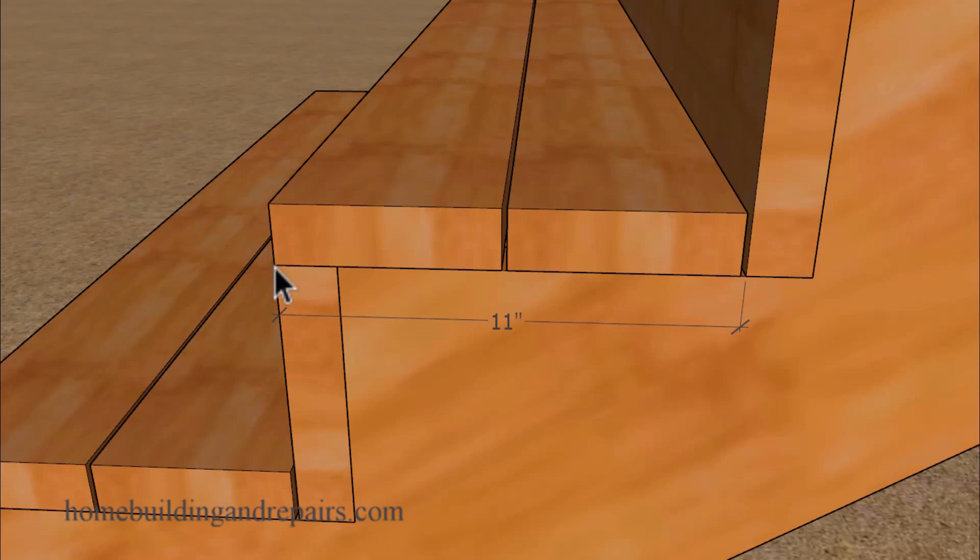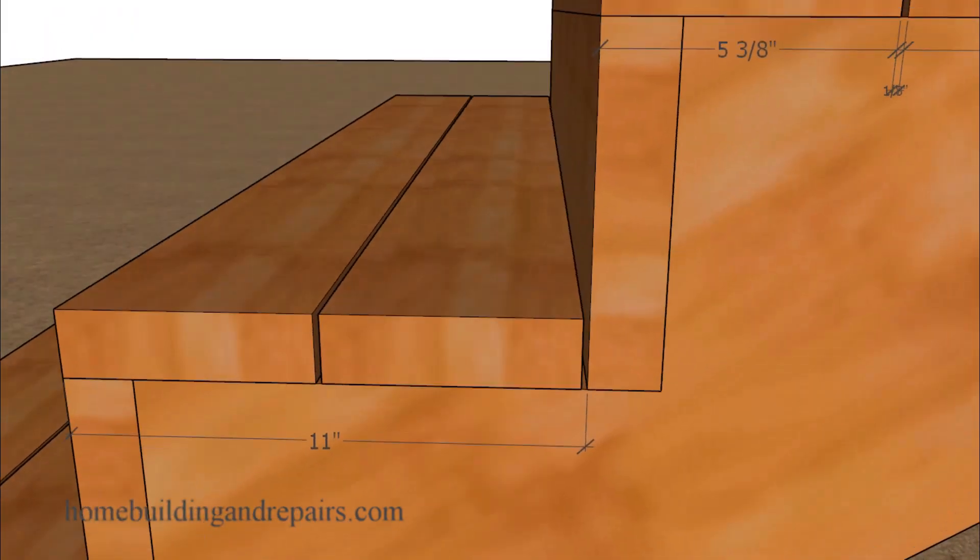We have an 11-inch tread from the front of the step to the back with two 1/8-inch gaps in between. This is for a deck. This might not be something you need to do on the interior.